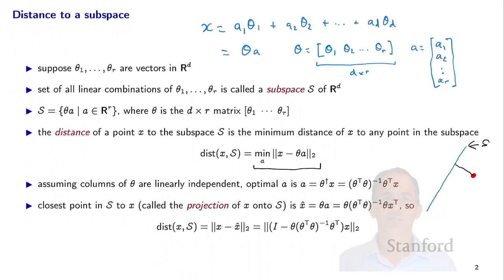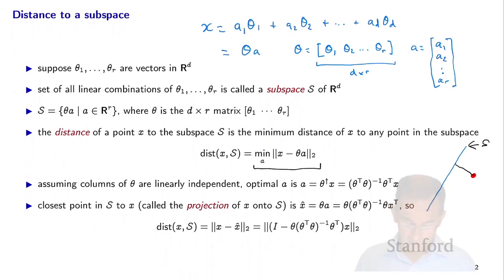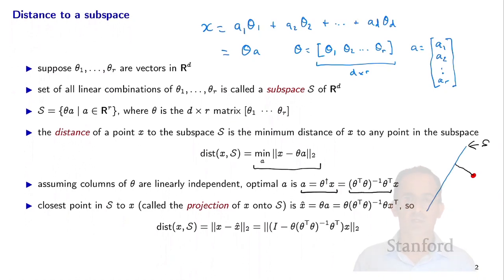Minimizing the distance and minimizing the distance squared are the same problem, so this becomes a least squares problem. The solution to the least squares problem gives the optimal a as Theta dagger times x. Theta dagger is the pseudoinverse: Theta transpose Theta inverse Theta transpose. This works if Theta has linearly independent columns, in which case Theta transpose Theta is invertible.